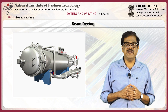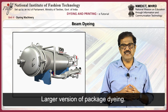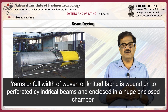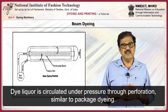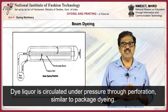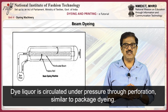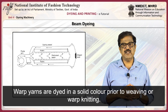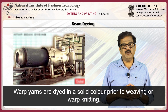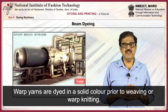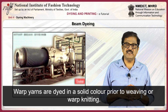Next, we will discuss about beam dyeing. Beam dyeing is a larger version of package dyeing. Yarn or full width of woven or knitted fabric is wound onto perforated cylindrical beams and then enclosed in a huge chamber. The dye liquor is circulated under pressure through perforations, similar to package dyeing. Warp yarns are dyed in a solid color prior to weaving or warp knitting. It provides good color absorption and better color fastness than piece dyed methods.